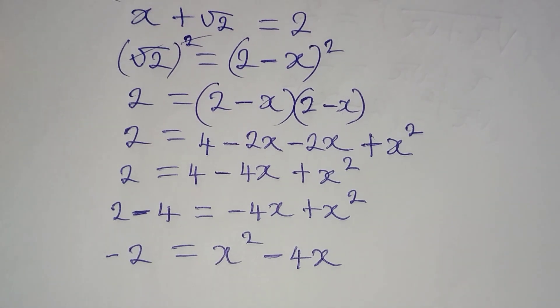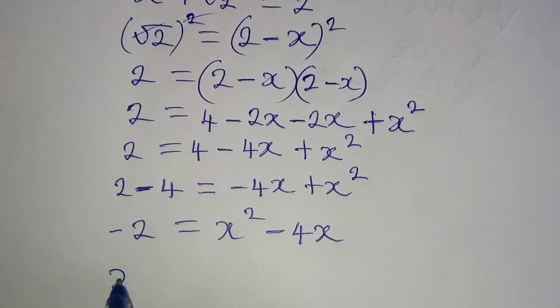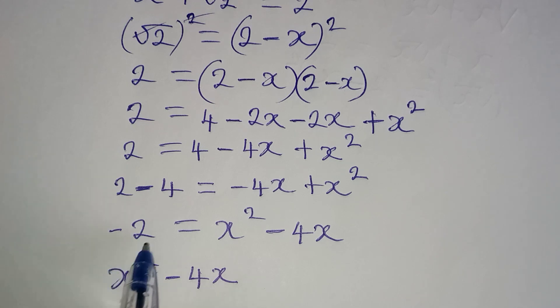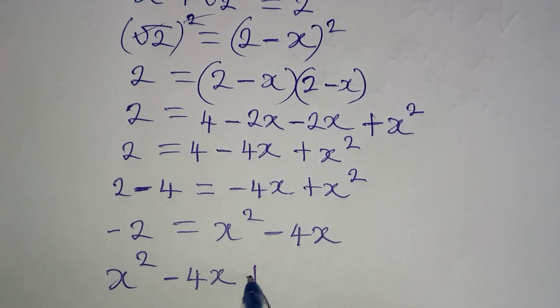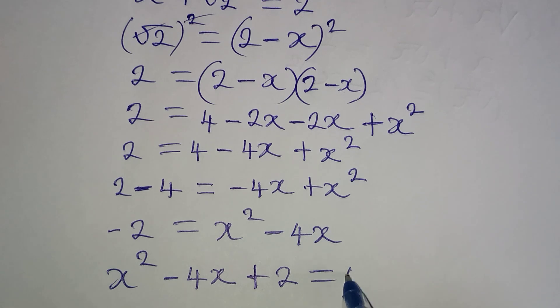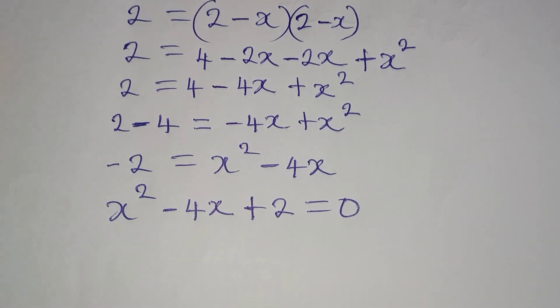Then from here, I want us to rearrange this. If I write this first, I'll have x squared minus 4x. Then this minus 2, since it's coming to meet with this, it becomes plus 2. And everything equals 0, because there's nothing on the other side at the moment.